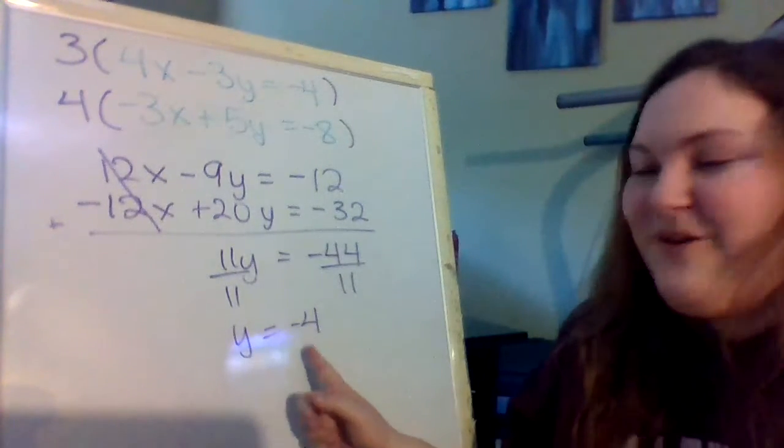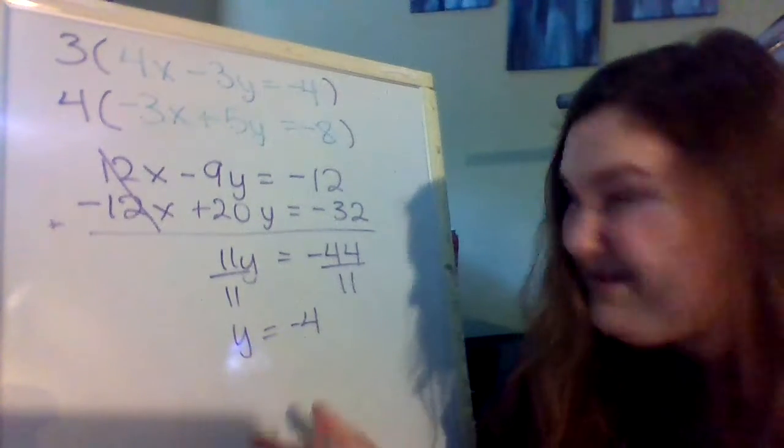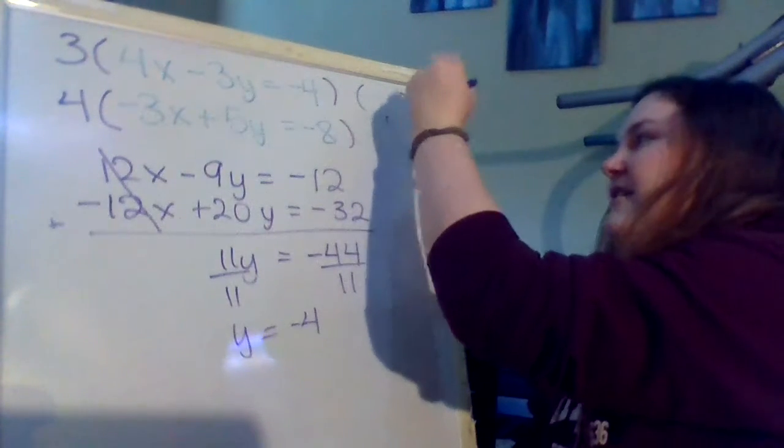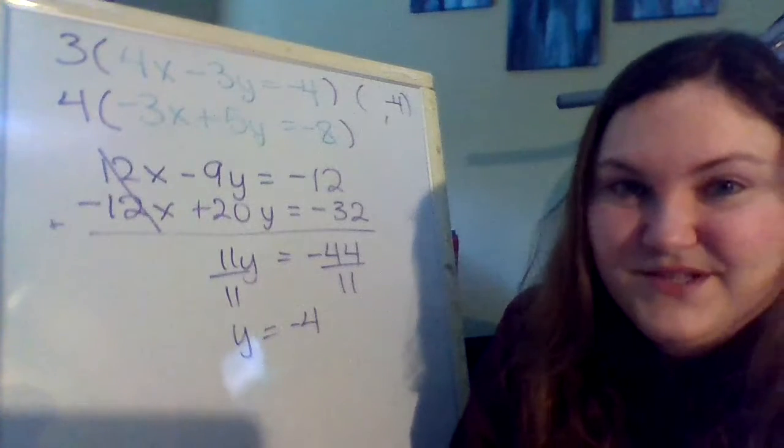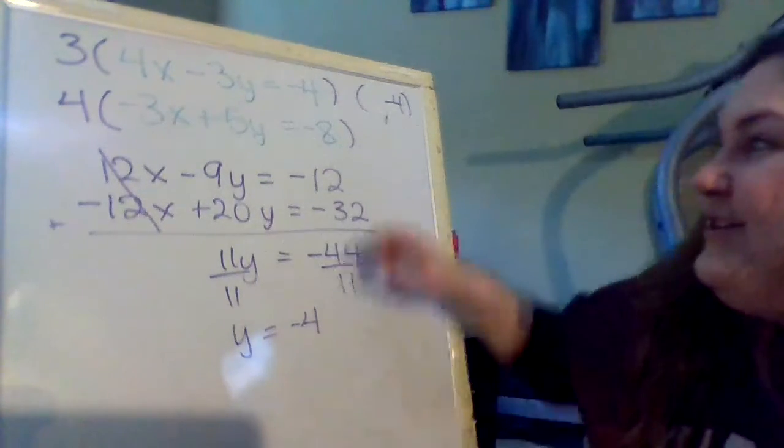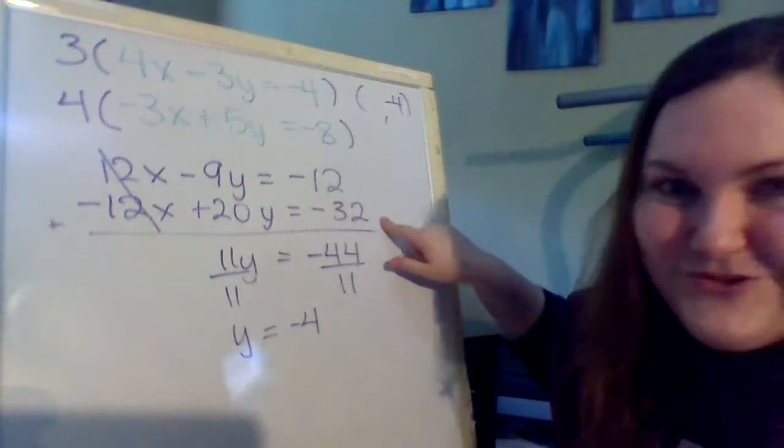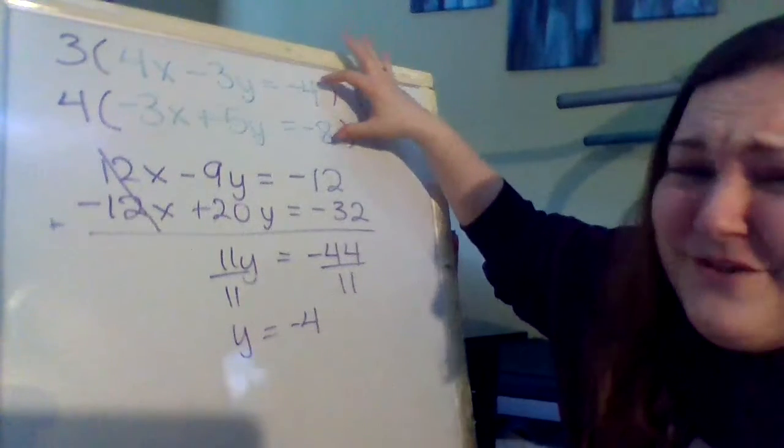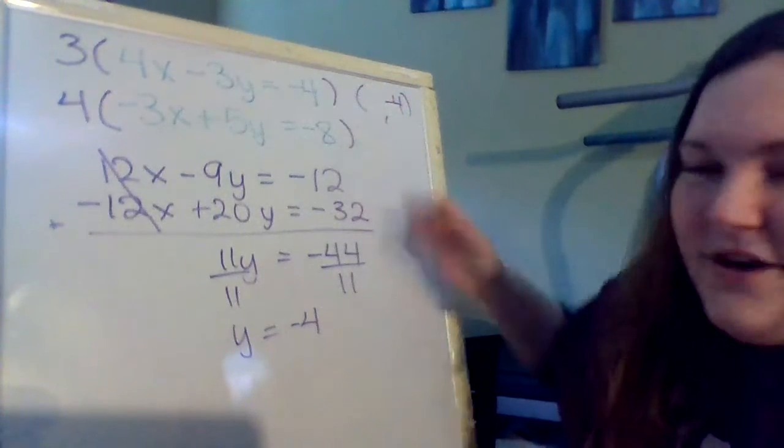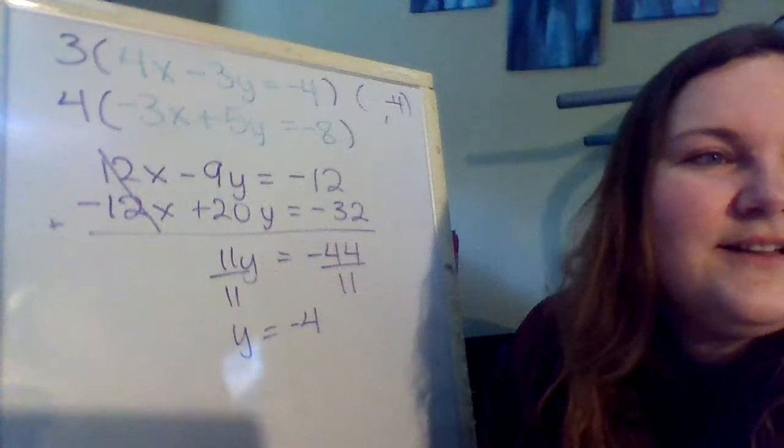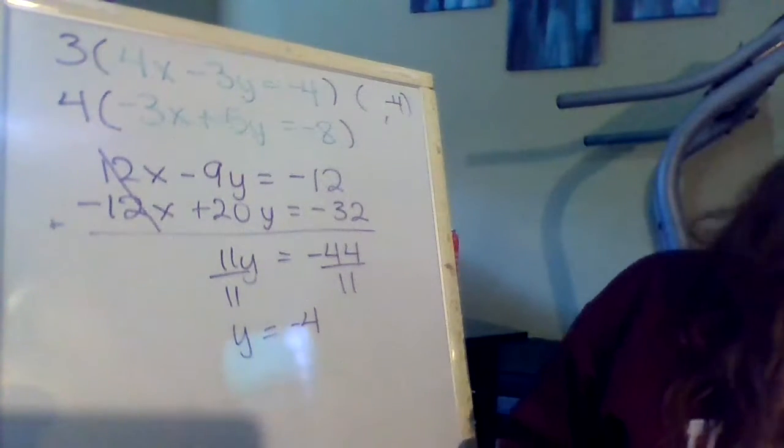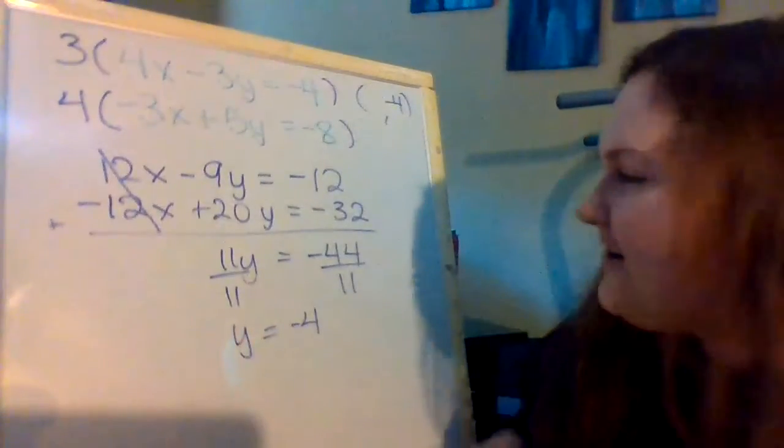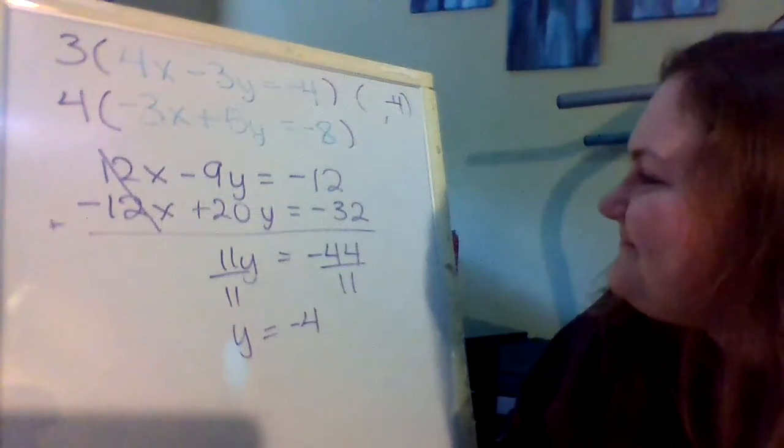Also like last time, you've got one variable, you need the other one so that we can write our point. So we've got negative 4 for y. To find x, we need to substitute. Now, you can substitute in any of these equations. My advice is use one of the original ones, because these are always going to have larger numbers than them. Sorry. Amaya, it's okay. Crazy dog.